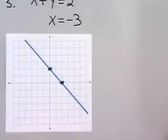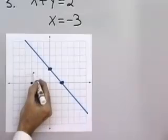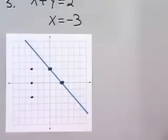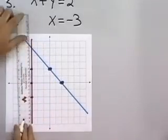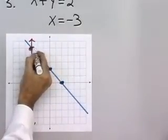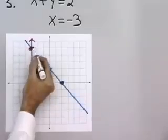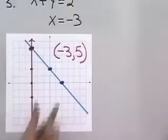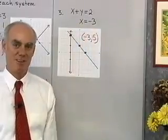My second equation is x is equal to negative 3. That means x is negative 3 and y can be anything — for example, x is negative 3 with y equal to 0, 2, or negative 2. Any of those points satisfy that equation. Drawing a line between them gives a vertical line. Here's the point where the two graphs intersect at x equal negative 3, y equal 5. So x equal negative 3, y equal 5 is the only ordered pair that satisfies both equations and is therefore the solution to this system.